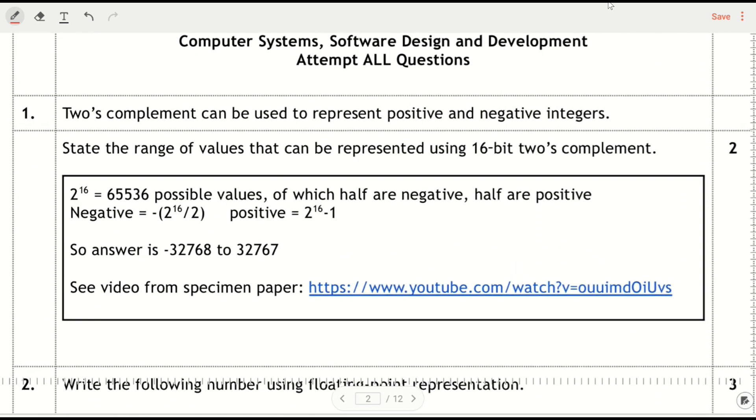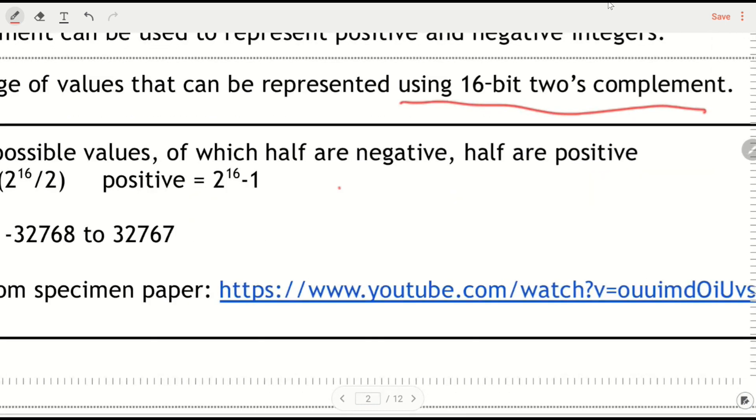So first of all, some of the systems questions. The range of values can be represented using 16-bit two's complement. So I know that I've got 2 to the power of 16 values to play with. Half of them are going to be negative, half are positive. So if I half that and that works out at 32,768.